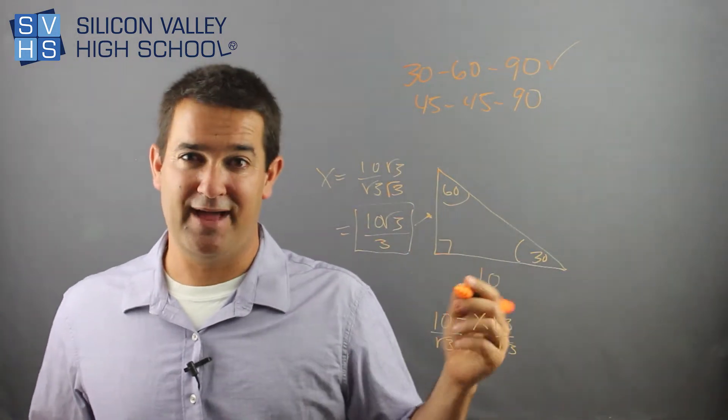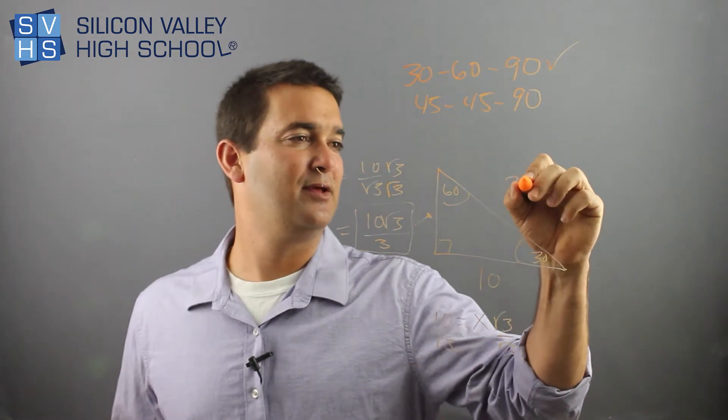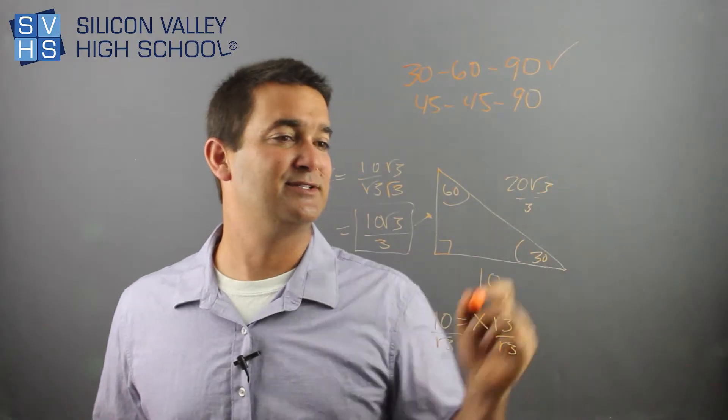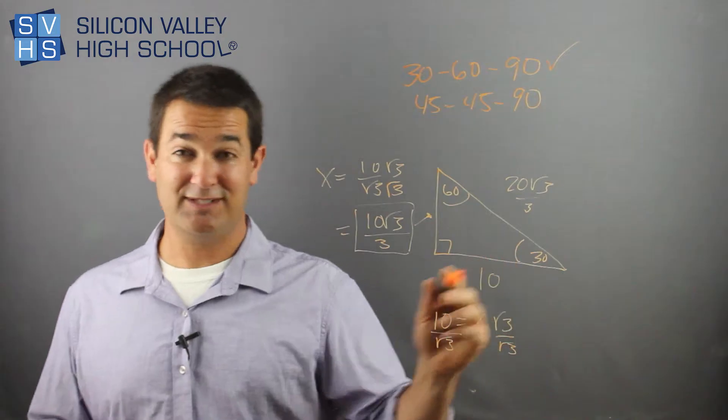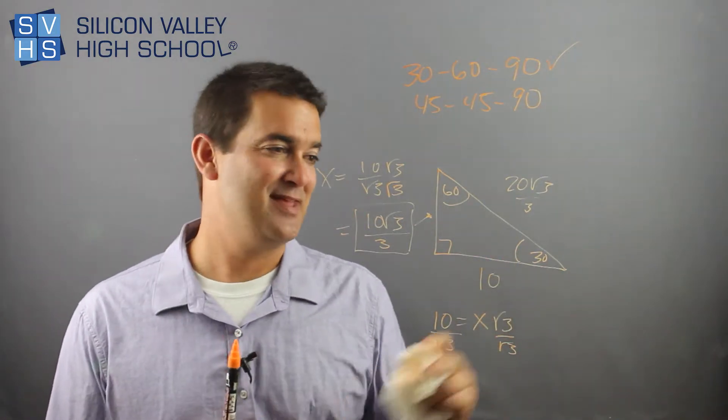You actually have to rationalize the denominator now, and remember, that's multiplied top and bottom by root 3. So you'd end up with 10 root 3 over 3. So that would be your x or your shortest side. Now, your hypotenuse, just double that: 10 root 3 over 3, 20 root 3 over 3, doubled. So you're done. So if they give you a whole number for the root side, then I agree, it's pretty lame.